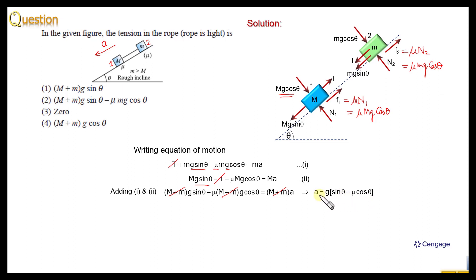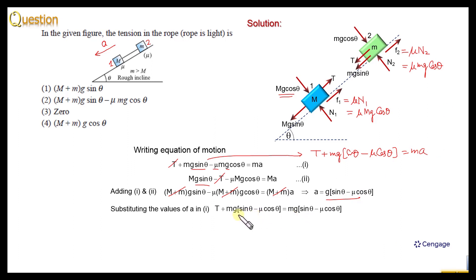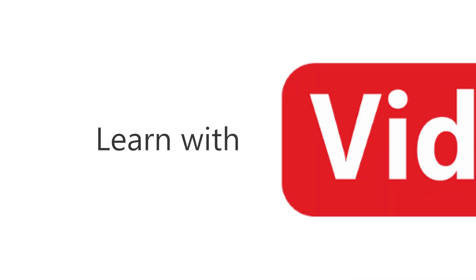Now we can substitute this value of acceleration into equation number one. In equation one, we have T + mg sinθ − μmg cosθ equal to m times g(sinθ − μcosθ). We observe that on both sides mg sinθ − μmg cosθ appears, so these terms cancel. That means T is equal to zero. Therefore, option 3 is the correct answer.